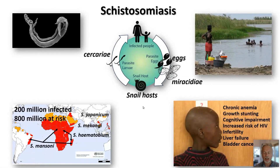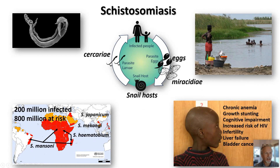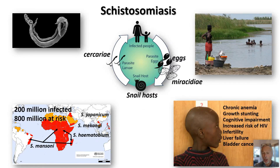I specifically work a lot on schistosomiasis. Schistosomiasis is probably one of the most important of the so-called neglected tropical diseases. It is present in four continents, in 74 countries, affecting basically 200 million people, with 800 million people at risk. This specific parasitic disease has a very interesting life cycle.